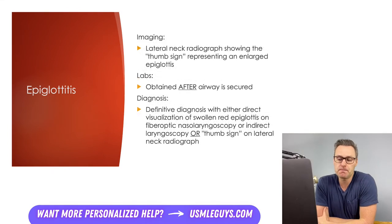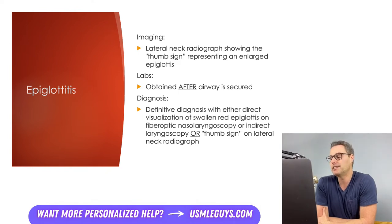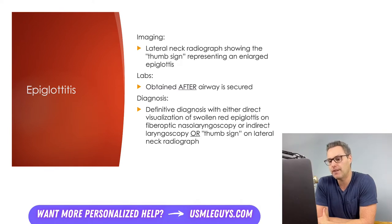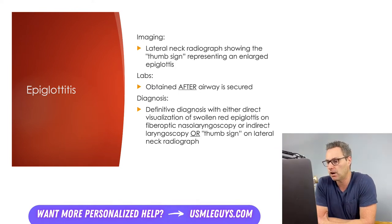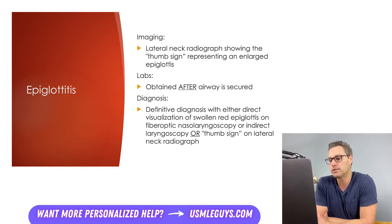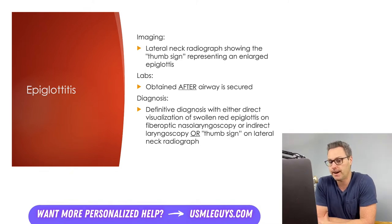Airway management shouldn't be delayed for imaging, and it's important to have appropriate airway interventionists at the bedside ready to intervene in case of deterioration. However, a lateral neck radiograph can confirm the diagnosis by visualizing the thumb sign, which represents an enlarged epiglottis. Thickened aryepiglottic folds and loss of vallecular airspace may also be seen on lateral neck radiography. Labs should always be obtained after the airway is secured. Any intervention that provokes anxiety should be delayed until the airway is secured.